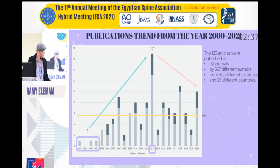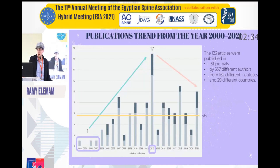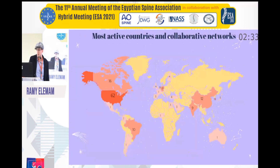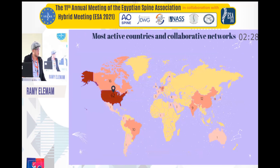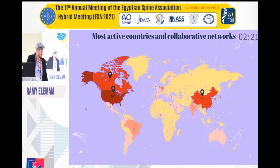This also resulted in an average of 5.6 publications per year. The most active countries were the USA in first place with 62 publications, Canada with 16, and China with 12. Tied for third place were South Korea, Germany, and Brazil.